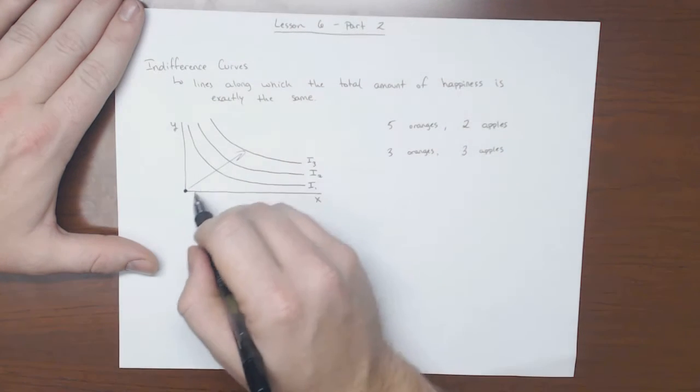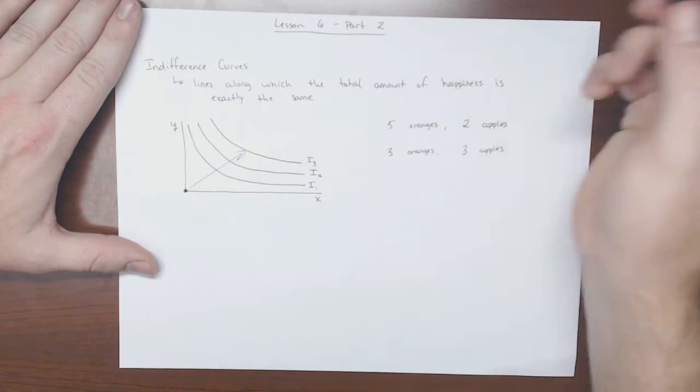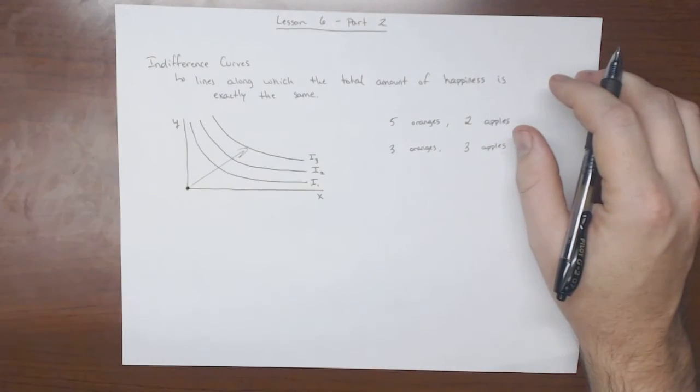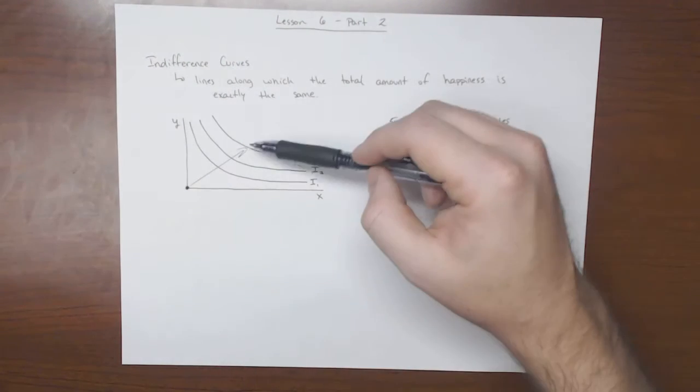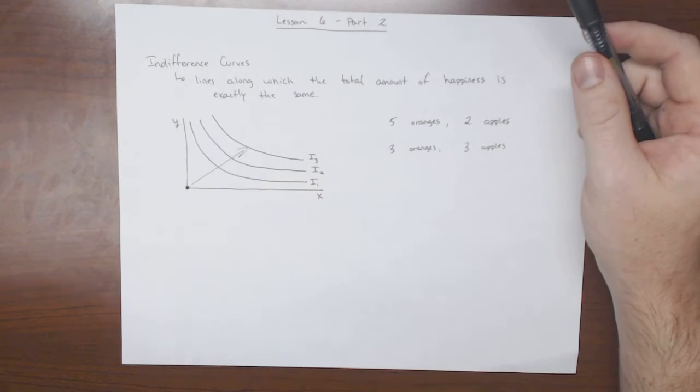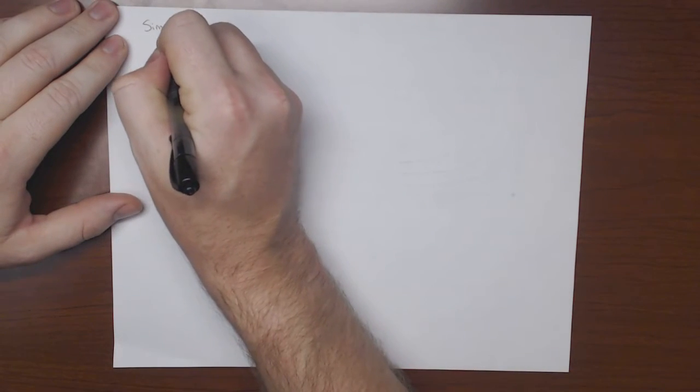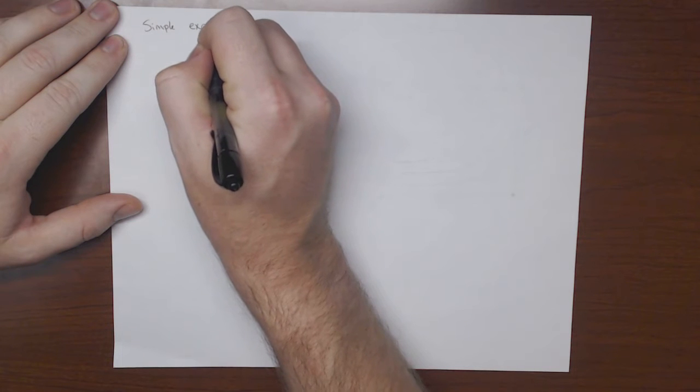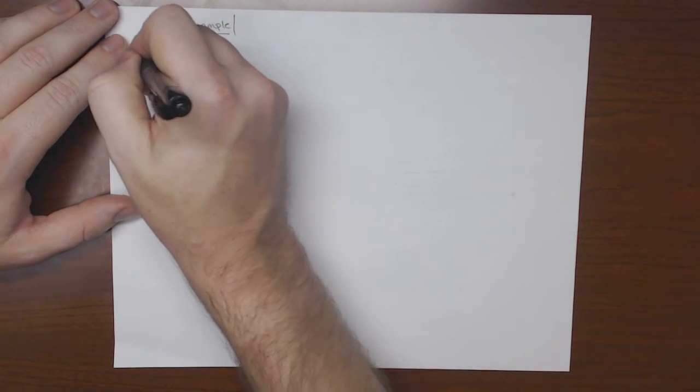So moving in this direction, or this direction, or this direction is happier. We're happier getting further and further away from this origin. And so the goal is to be on the highest indifference curve that we can possibly be on. So let's do a simpler example.